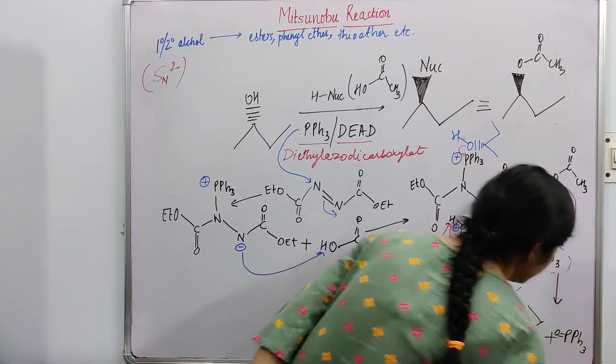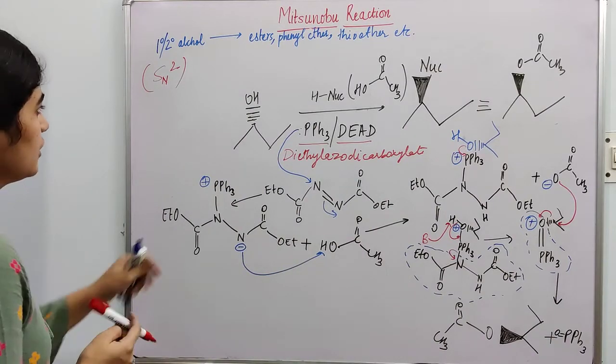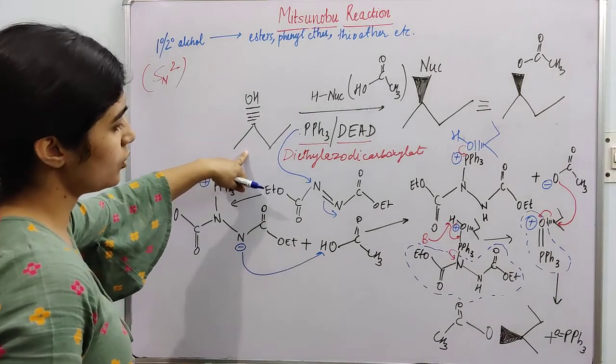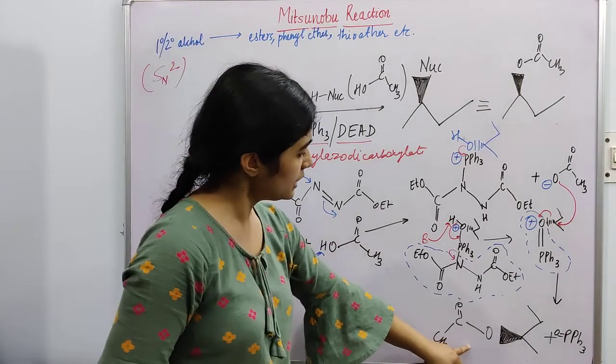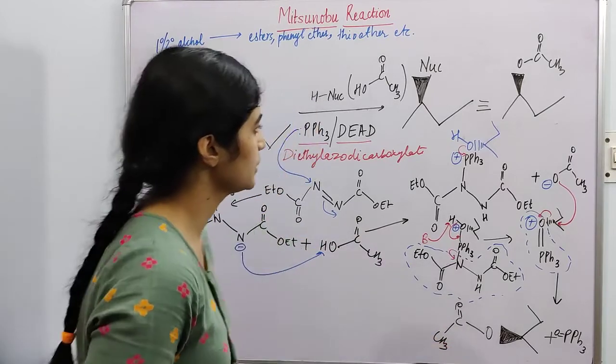So this will be your product. And this will be the side product. So what is happening here is, you are getting from secondary alcohol, you are getting an ester, and there is inversion of configuration.